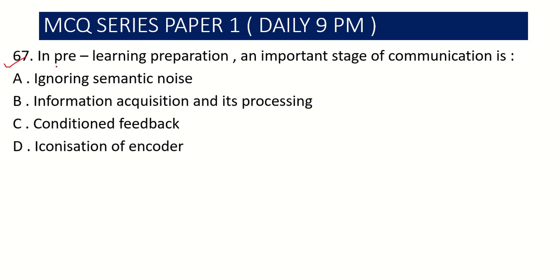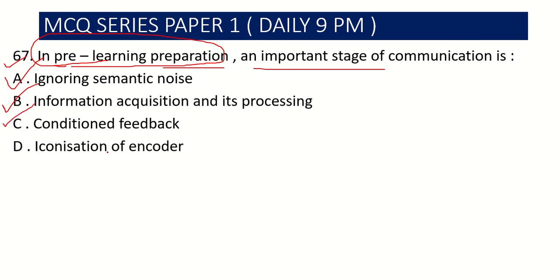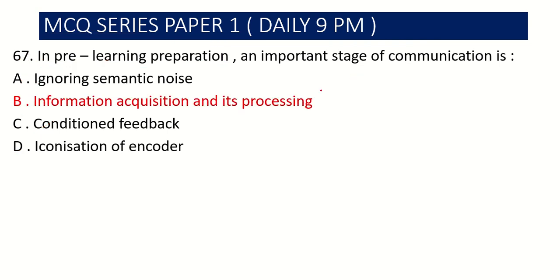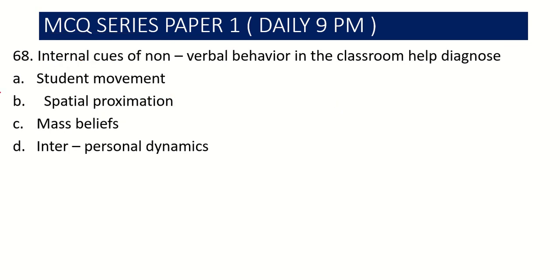Question number 67: In pre-learning preparation, an important stage of communication is — Option A: ignoring the semantic noise, Option B: information acquisition and its processing, Option C: conditioned feedback, Option D: iconization of encoder. In pre-learning preparation, the important stage is information acquisition and processing, so Option B is the correct answer.